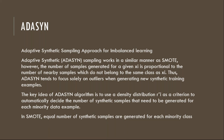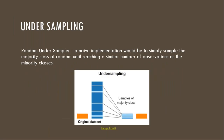ADASYN gives more importance to the outliers compared to SMOTE, which gives equal importance to all minority samples. The techniques explained so far are all about oversampling. The other data resampling technique is undersampling — the opposite of oversampling. In undersampling, the majority class examples are reduced so that the count becomes equal to the minority class. The basic technique is random undersampling: it randomly selects majority class samples and removes them.